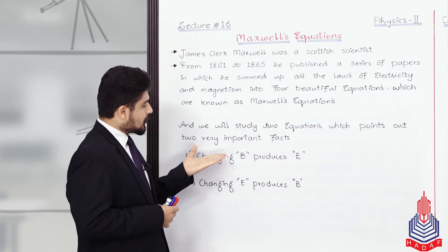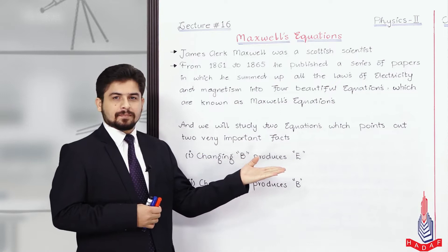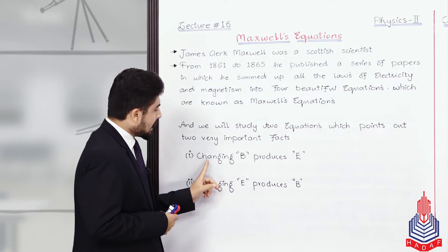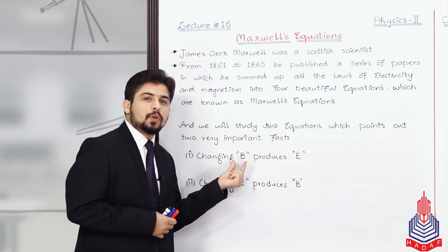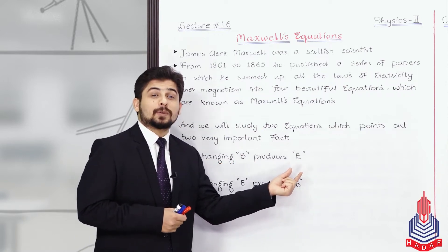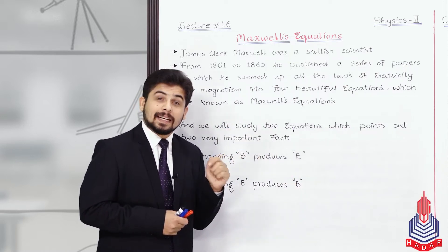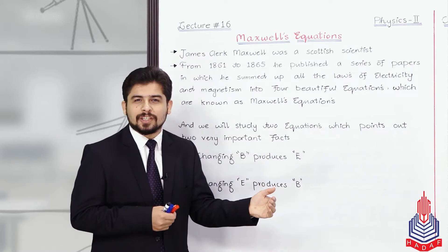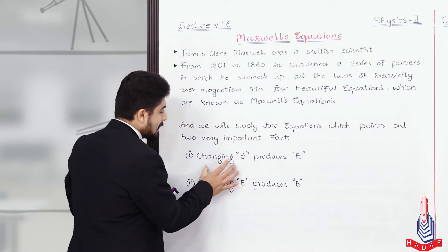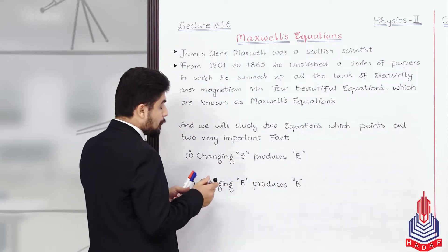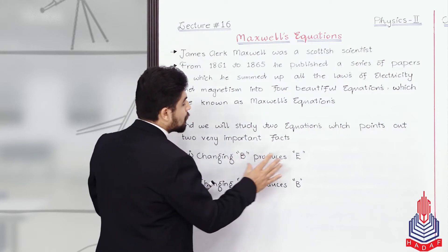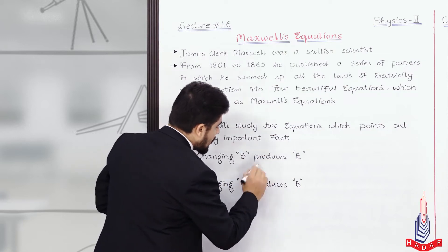Number one: changing B produces E. We will study two equations. The first result: when we change B through any loop, we get an electric field. And when an electric field is established, it will cause charges to flow. And charges flowing means there must be some potential difference — that is, EMF, induced EMF from Faraday's law. So this result actually gives us Faraday's law.